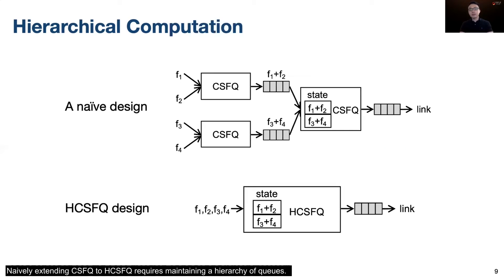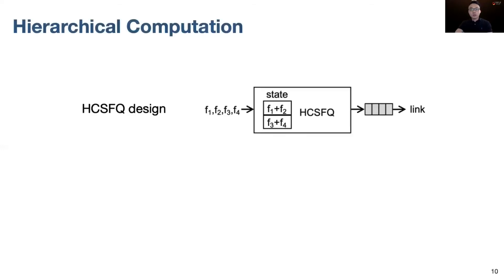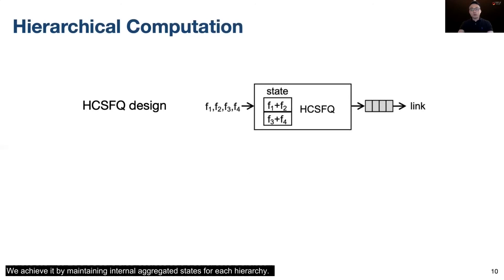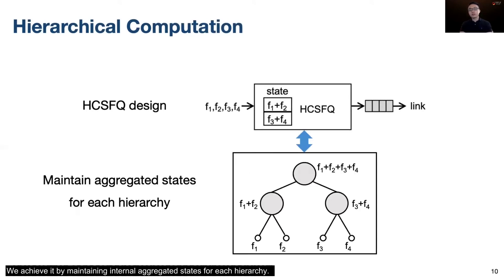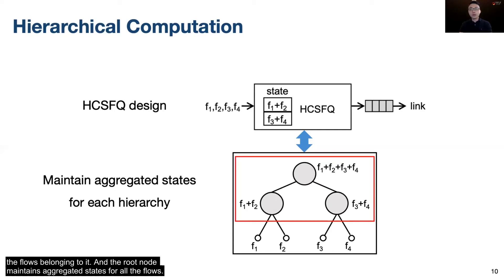Naively extending CSFQ to HCSFQ requires maintaining hierarchical queues. We wondered if we can simplify this, since the queues ultimately just produce a result to determine whether a packet should be dropped or not. We achieve this by maintaining internal aggregated states for each hierarchy, organized as a tree. Each leaf node represents one flow, each non-leaf node maintains aggregated states for the flows belonging to it, and the root node maintains aggregated states for all flows.